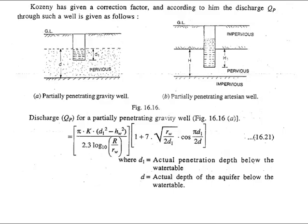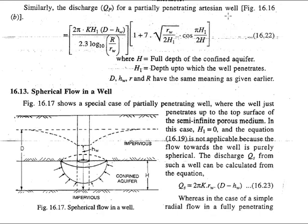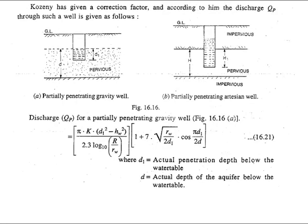So in that case there will be some modification in the formula and that modification was given by Kozeny. He introduced several unknown quantities and modified Dupuit's formula. This is the formula for discharge for partially penetrating unconfined aquifer. All these unknown quantities will be given, you just need to put the values and get the discharge value. Similarly for the artesian well or confined aquifer, we will get the discharge formula and when we put the known quantities we can get the actual value of Qp due to partial penetration.